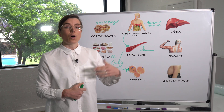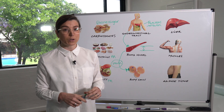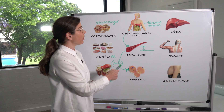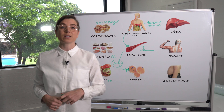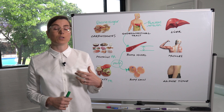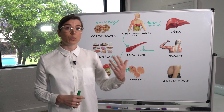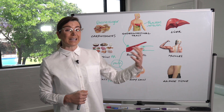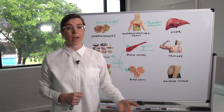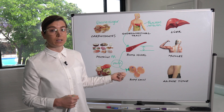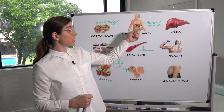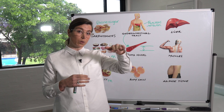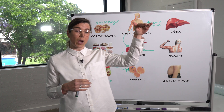Over time, if we don't address the underlying insulin resistance, the pancreas starts to get exhausted and runs out of insulin. We then see insulin deficiency develop alongside the insulin resistance, and together both cause blood sugars to continue to rise.